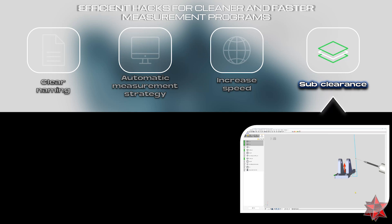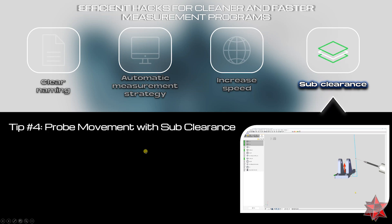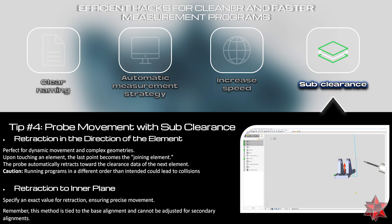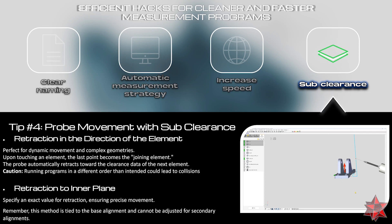Calypso's Sub Clearance function offers two powerful ways to optimize probe movement between features without leaving the clearance cube. The first is retraction in the direction of the element — perfect for dynamic movement and complex geometries. Upon touching an element, the last point becomes the joining element and the probe automatically retracts toward the clearance data of the next element. Important heads up: running programs in a different order than intended could lead to collisions, so be very careful with this function.